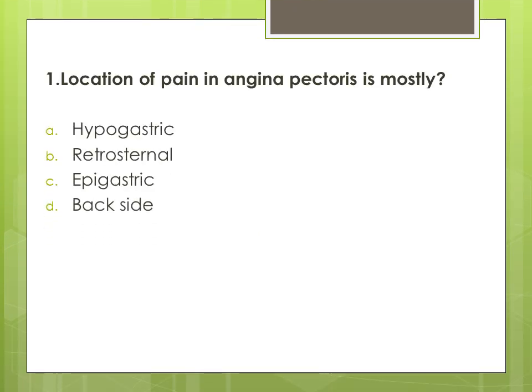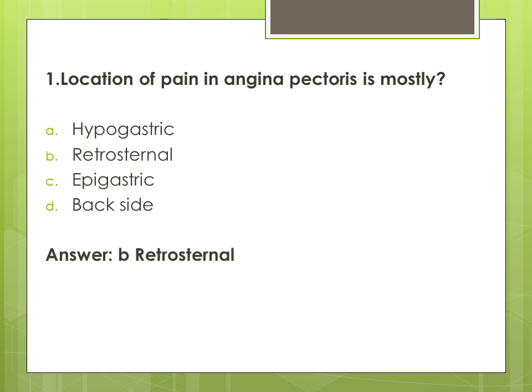Question 1: The location of pain in angina pectoris is mostly — options are: A. hypogastric, B. retrosternal, C. epigastric, and D. backside. The correct answer is B. retrosternal.